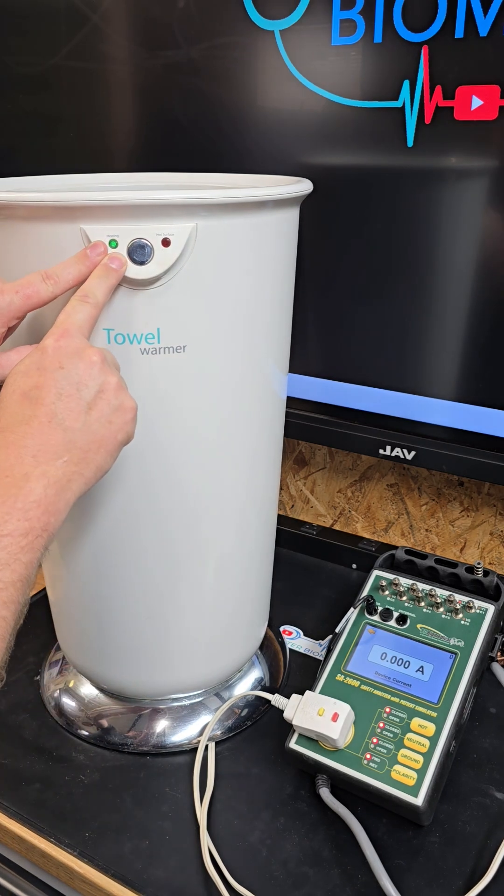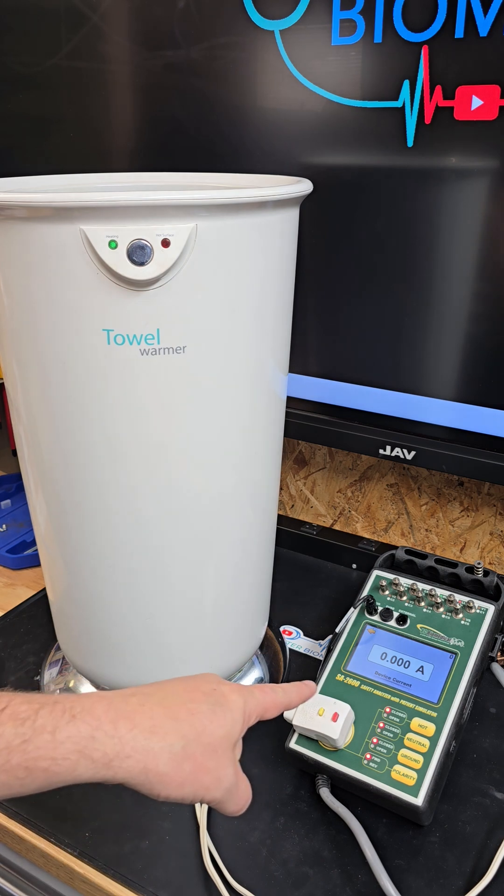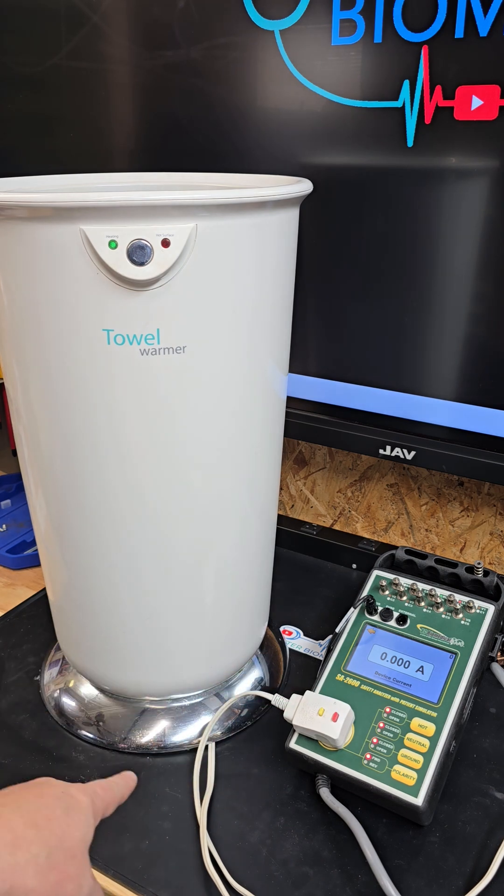The SA2600 by BC Biomedical makes it so easy to troubleshoot devices, especially things that use AC power and AC mains. You can see exactly what it's doing. Just remember to use the build or data sticker that's on the device.